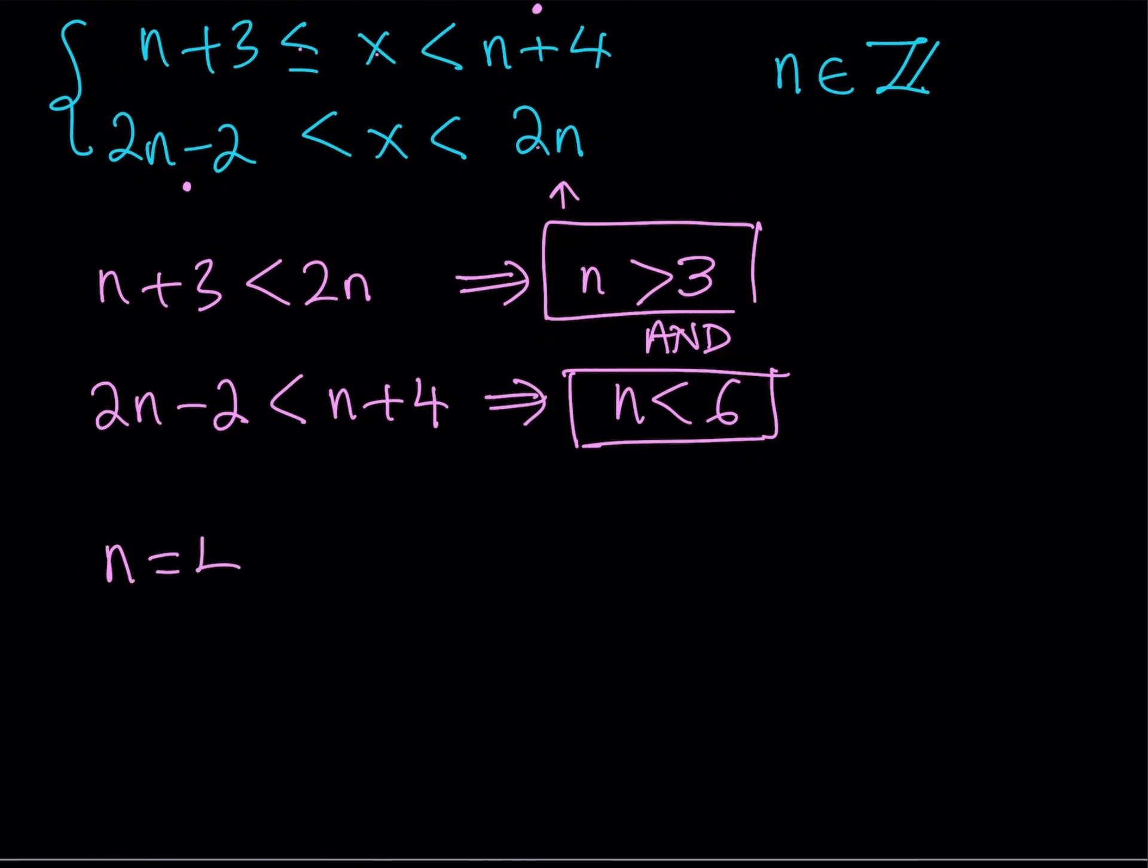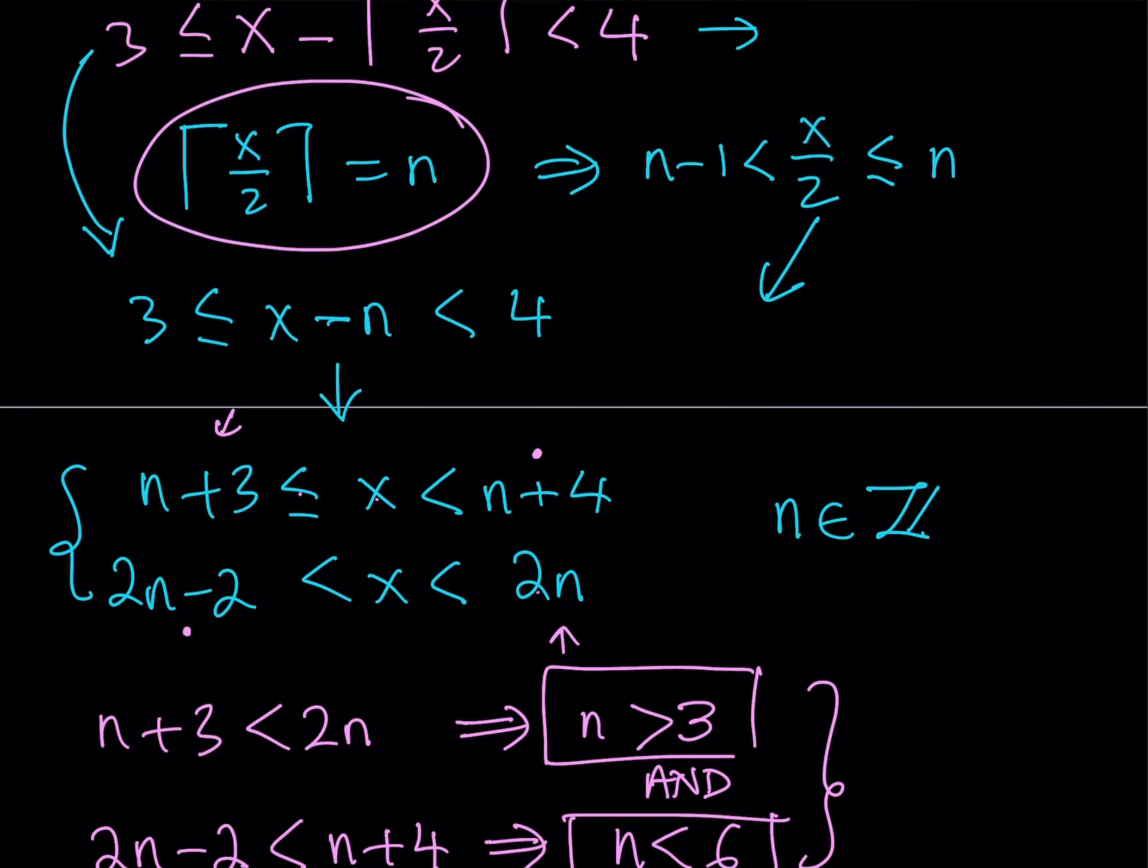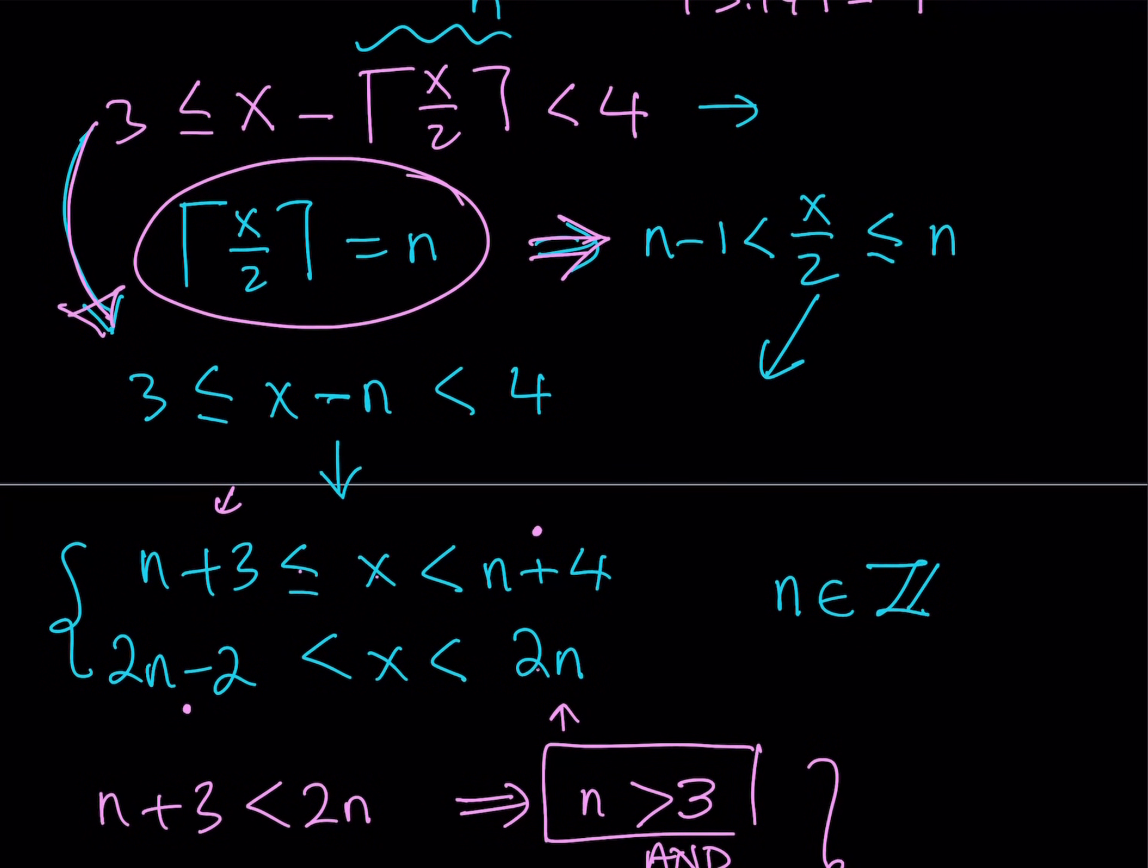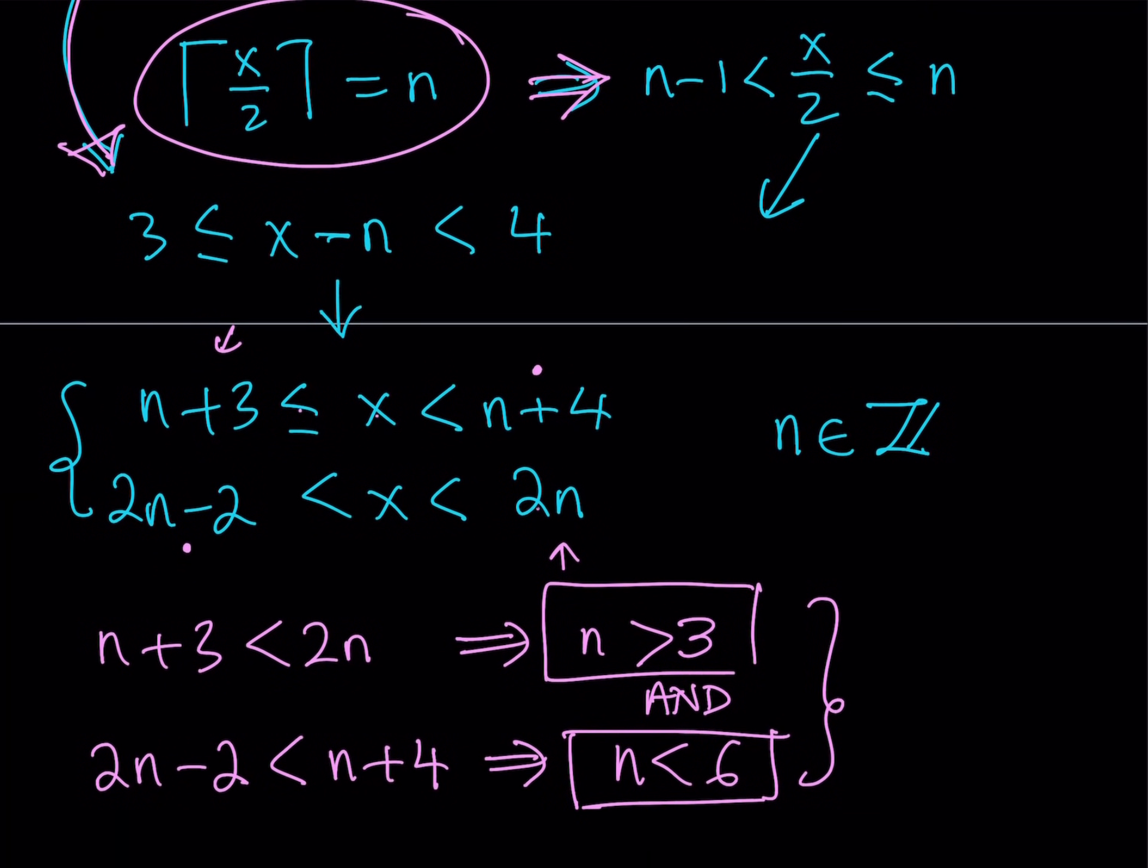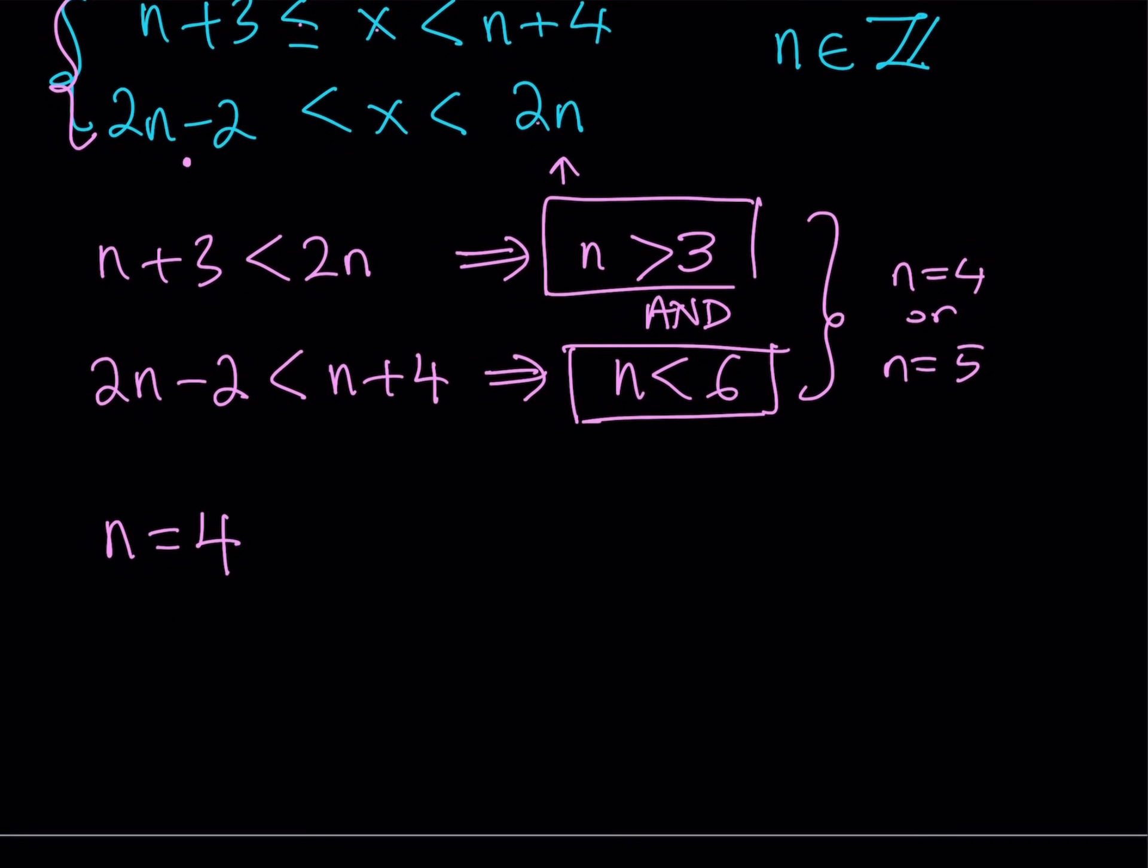So what happens if n is equal to 4? Great. Let's take a look. So hopefully this made sense. We wrote, by setting this equal to n, we were able to get an inequality like this one by using the definition of the ceiling function. And then from this one, we were able to get another inequality. We isolated x in both inequalities, and we did get a system of two inequalities in which n is an integer. And we're looking for the x values. Of course, x doesn't have to be an integer, but n has to be an integer. And as a result, we got that n needs to be greater than 3, and at the same time, less than 6. Which implies that n is equal to 4 or n is equal to 5. Notice the difference between and and or. They're different things, right?